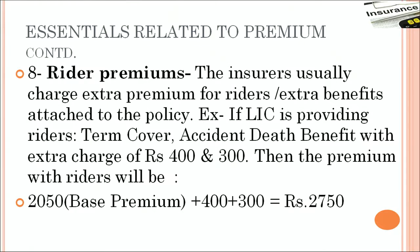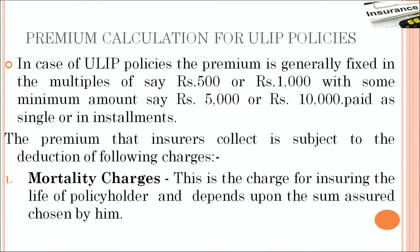When we talk about rider premiums, insurers usually charge extra premium for riders or extra benefits. There are certain riders which are inbuilt in the policies like accidental death benefit and permanent disability. But if you want to increase the cover to double or triple the amount, you will have to pay extra premium to get those additional benefits. For ULIP policies, the premium is generally fixed in multiples of 500 or 1000, with some minimum amount like a base amount of 5000 or 10000, which can be paid in a single premium or in installments.